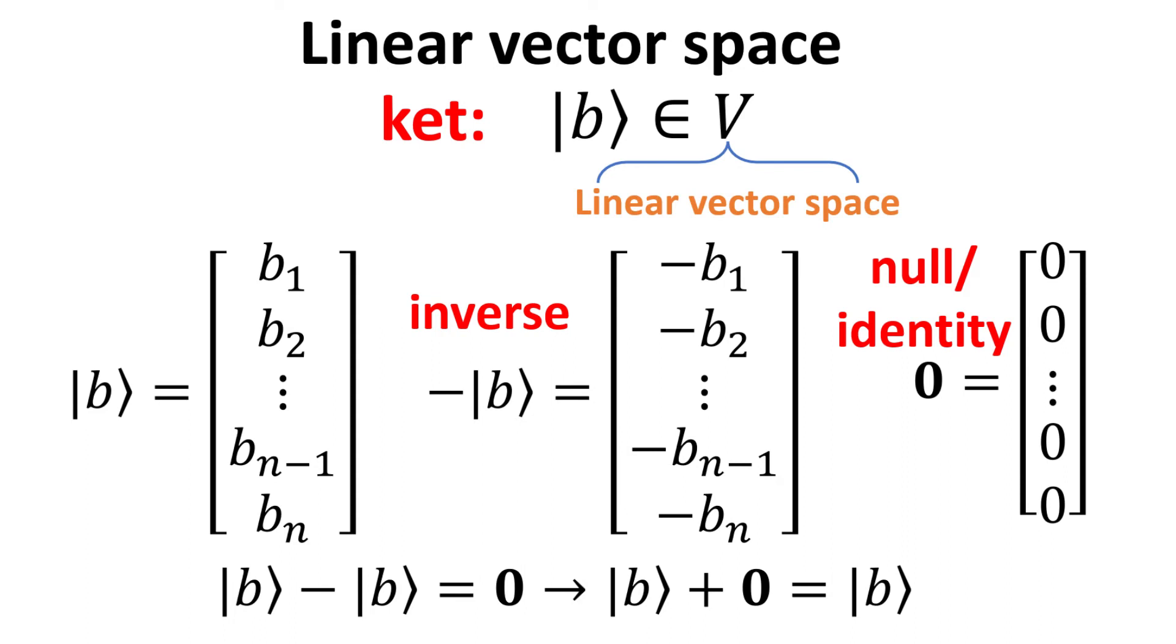For every B ket, there exists an element minus B ket in the vector space, which is called its inverse, such that their sum yields the null vector, which is the zero vector where all elements in the column vector is zero. The null vector is a key element of the vector space, and adding it to any ket yields the same ket, thus it is also the identity element.